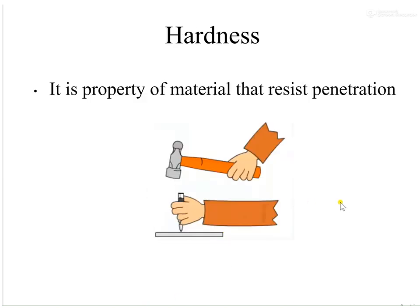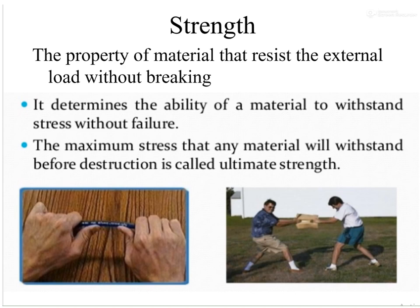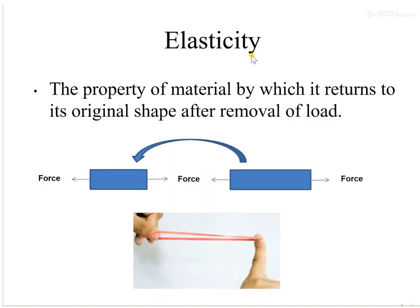Hardness is a property of material that resists penetration. If a material resists the penetration of a force, then that material has the hardness property. Strength is a property of material that resists external force without breaking — it determines the ability of a material to withstand stress without failure. If stress is applied, the material resists and does not break.